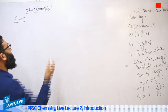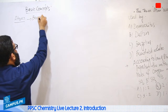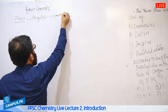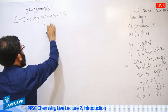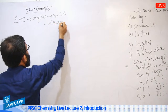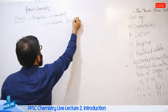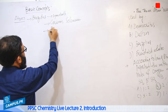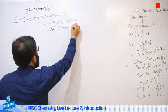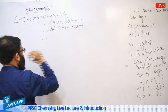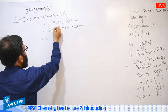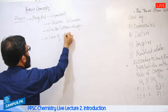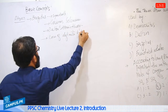When we look at the historical background of the atom, we cannot ignore Berzilius. Berzilius suggested atomic symbols. Berzilius discovered Cerium and Selenium. He also supported Dalton's Atomic Theory and the Law of Definite Proportion.